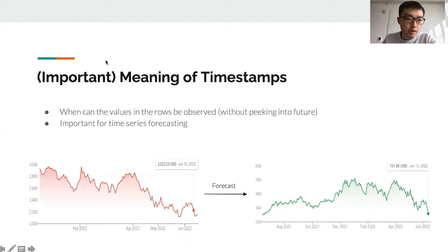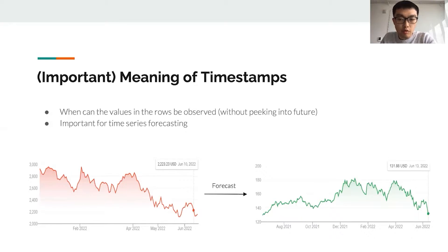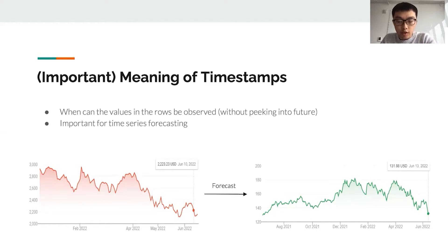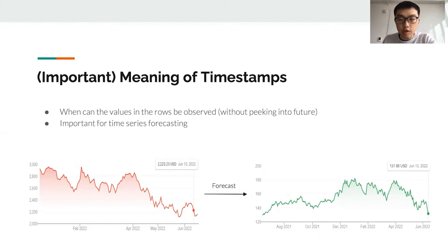Next, I want to talk about the meaning of timestamps in time series data, which is quite important for time series forecasting. The timestamp for a record is usually the timestamp when you can observe the values in that row without peeking into the future. This is important because in time series forecasting, we use data we can observe in the past or at the moment to predict data in the future. Without being very careful about the meaning of timestamps, you can easily introduce a look-ahead bias by accidentally including data you cannot observe at a specific time into the record.